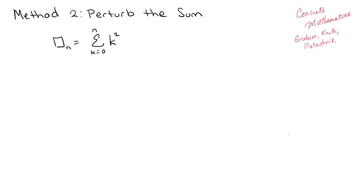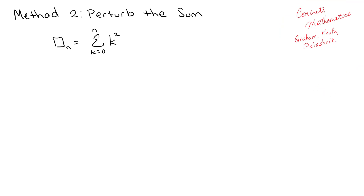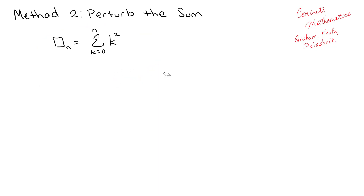We're going to continue on what we were working on in the previous video, which is basically going through section 2.5 of the Graham, Knuth, and Patashnik book Concrete Mathematics, trying to find all kinds of different ways to find this sum. We already know the answer, but we're just practicing to show that there's like a million different processes you can use. In this particular one we're going to do something called perturbing the sum, which means we're going to add additional terms and kind of mess around with them.